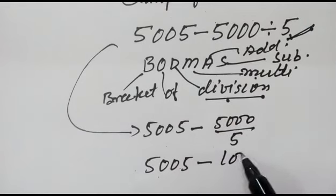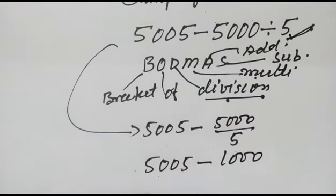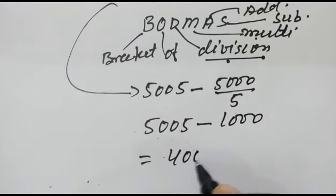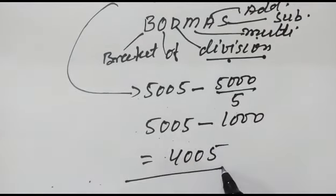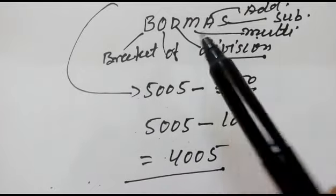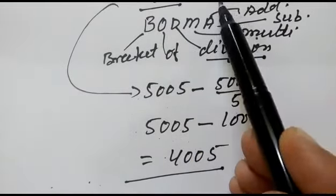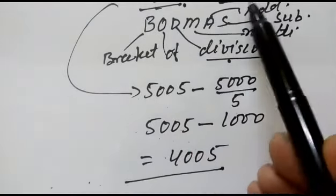The answer will be 4005. So sometimes people or students make mistakes. They subtract 5000 from this and then divide by 5.